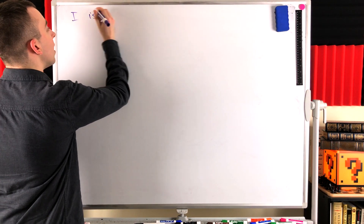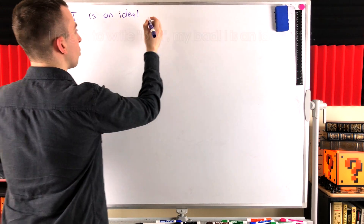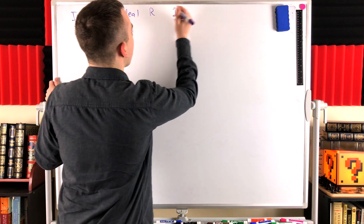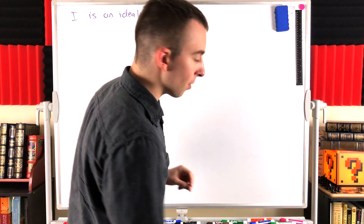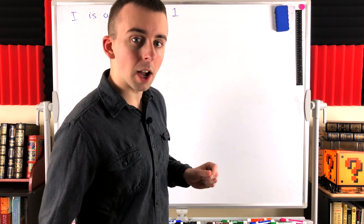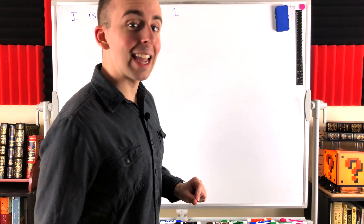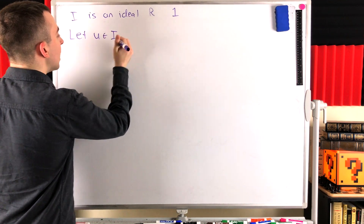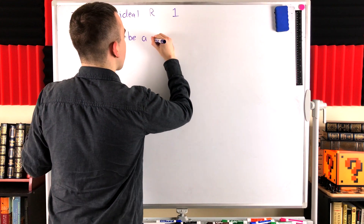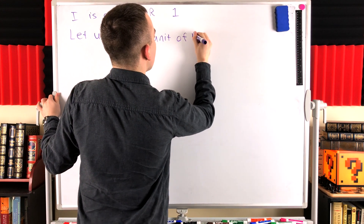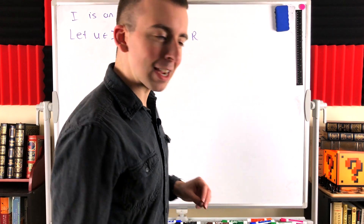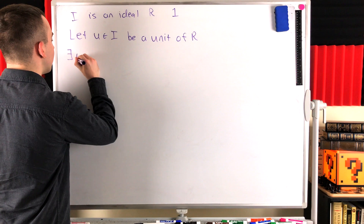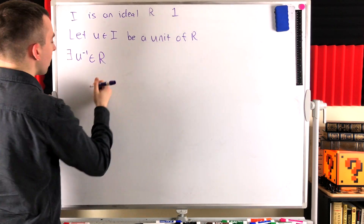So we're going to say that I is an ideal of the ring R, just so we have names for the things we're talking about. I is an ideal of the ring R, and remember R has a multiplicative identity — we'll call that 1. For this direction of the proof, using the contrapositive, we're assuming that the ideal does have a unit. Let U be an element of the ideal — let U in the ideal be a unit of the ring R. So U is in the ideal and it is a unit of our ring R, meaning it has a multiplicative inverse. This means there exists U⁻¹, an element U inverse in the ring R.